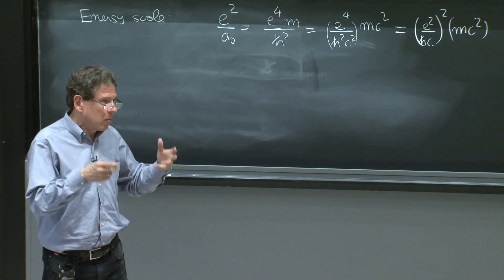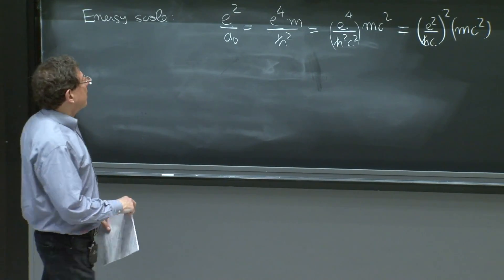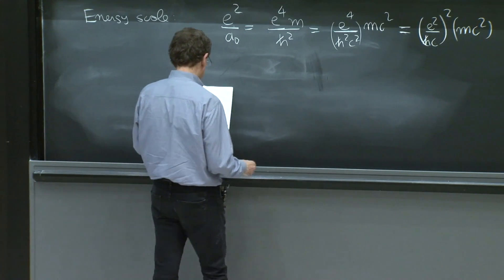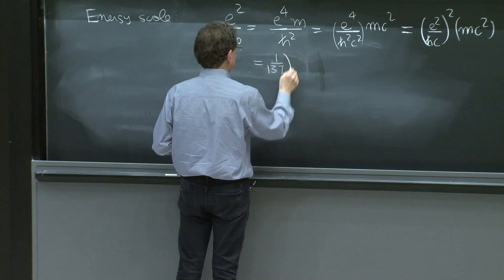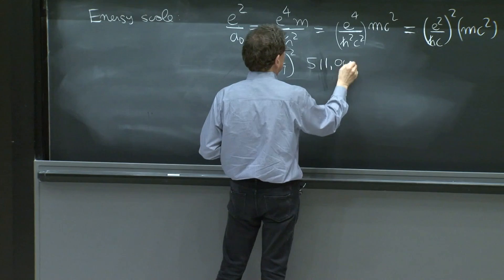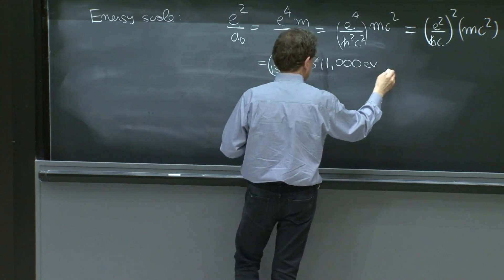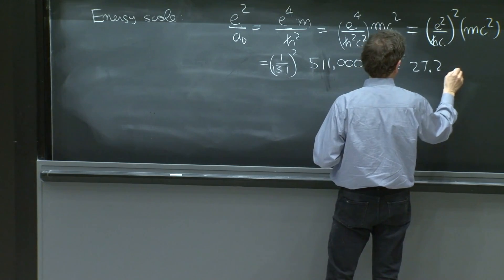So if the bound state energy should be something, it should be a number proportional to the energy that the problem already has. And the problem has one energy, the rest energy of the electron. So it's 1 over 137 squared times 511,000 eV. And that's about 27.2 eV.